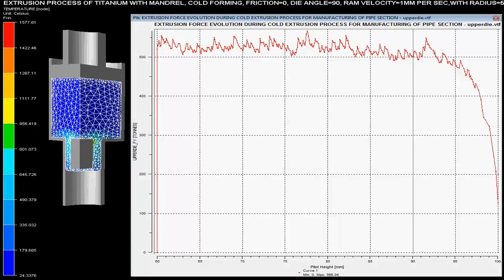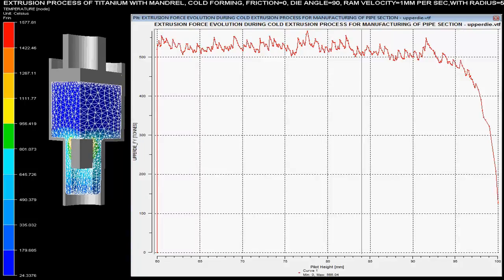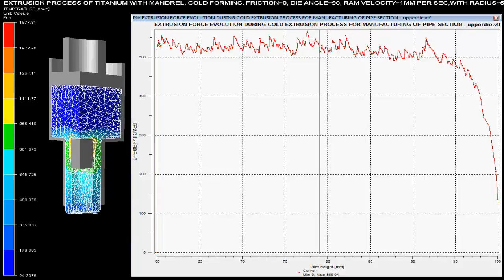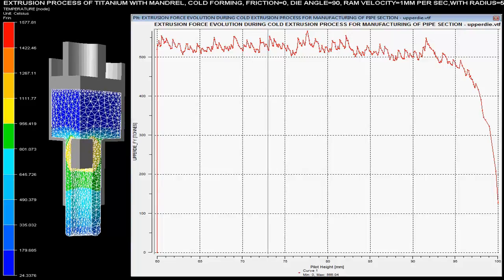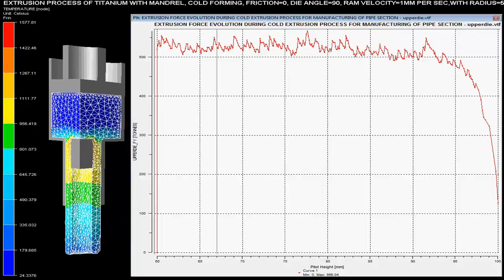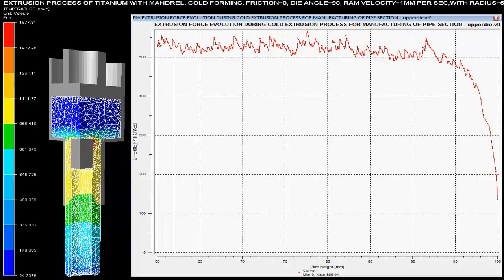In this video you can see the extrusion process of titanium pipe which comprises of a mandrel in the extrusion die. This process is called extrusion where different parameters are controlled on the basis of given specifications.